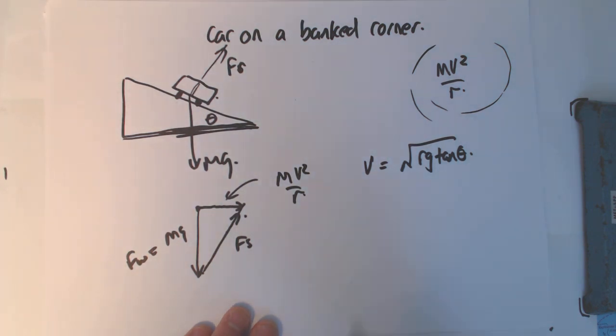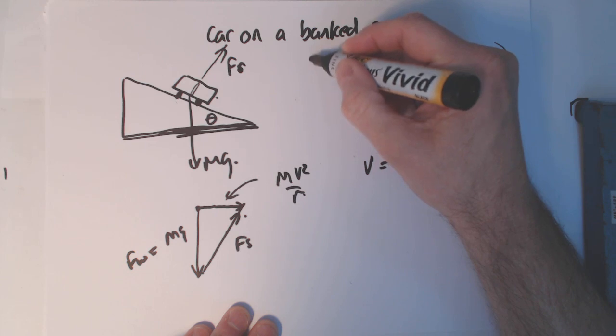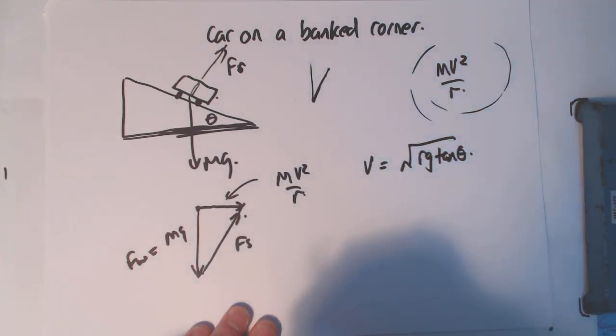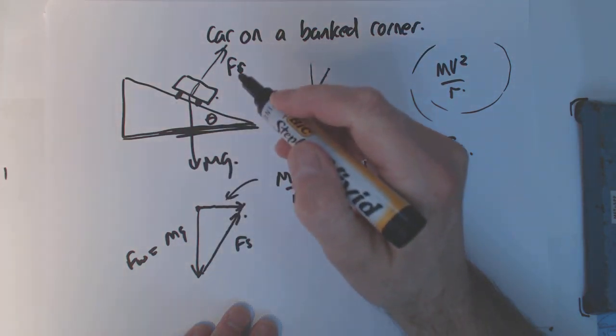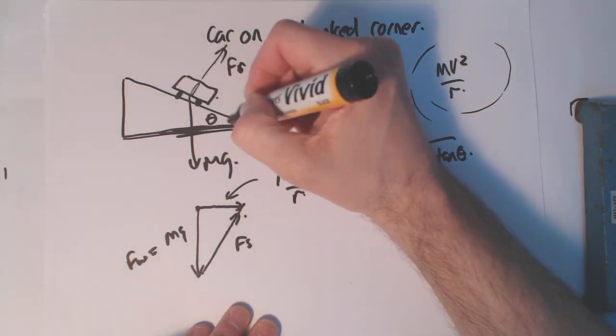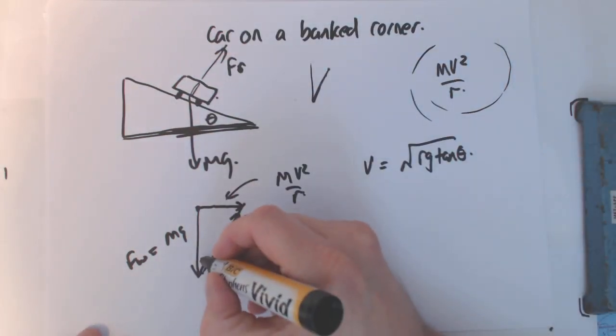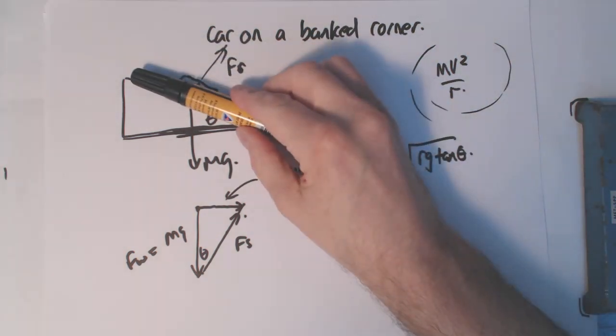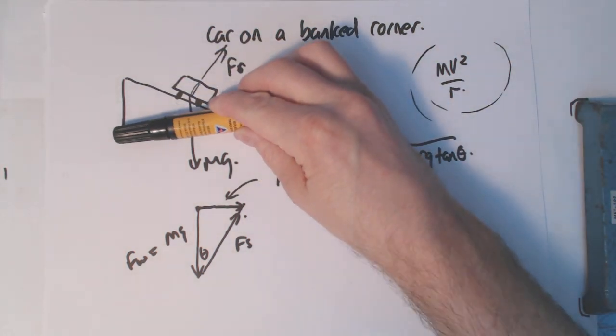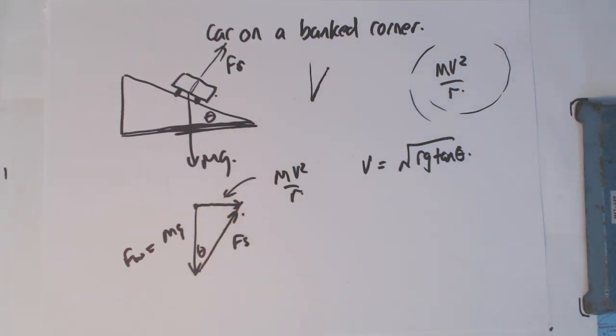In the conical pendulum, it was quite easy to see that theta was the angle between the vertical and the string, right? With this one here, what we're saying is that this angle here – the angle of the ramp – is going to be the same as this angle here. Does that look reasonable? Well, as we decrease the ramp down to zero, the support force goes to the vertical, so these two thetas are exactly the same. Now there's a